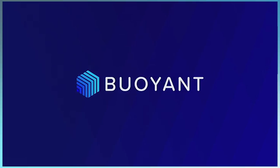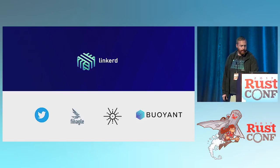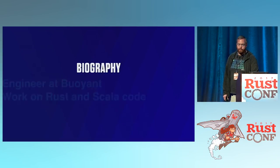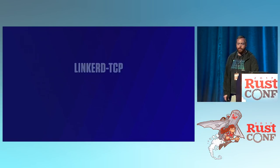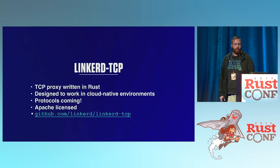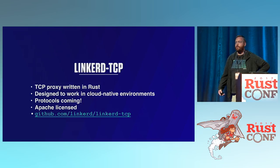I'm an engineer at Buoyant. We make Linkerd, a cloud-native service proxy — what's called the service mesh. I work on Rust and Scala code. One of the things we've built is Linkerd TCP, a TCP proxy written in Rust, designed for cloud-native environments like Kubernetes or DCOS. We have more protocols coming — right now it's TCP, but we're adding HTTP too.